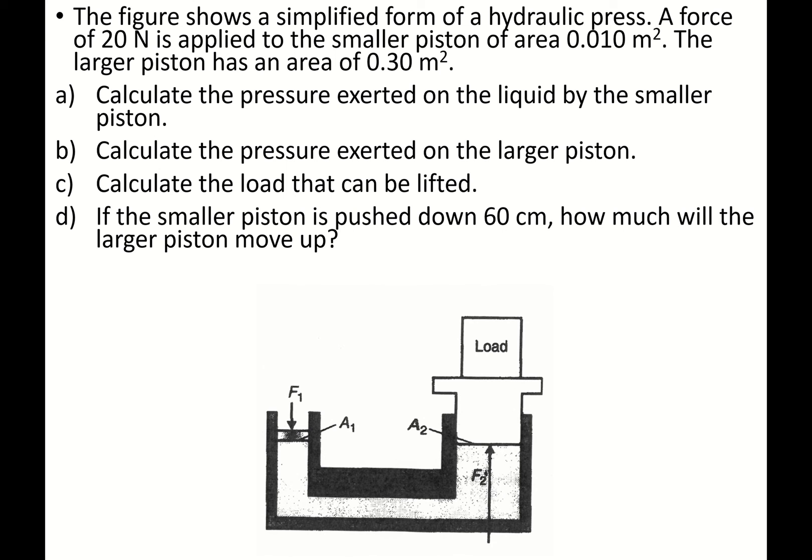The figure shows a simplified form of a hydraulic press. A force of 20 N is applied to the smaller piston of area 0.010 m². So what I have here is 20 N and this is 0.010 m². The larger piston has an area of 0.30 m².